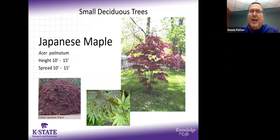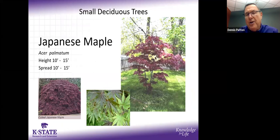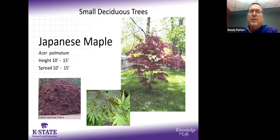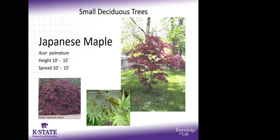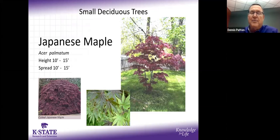Japanese maples range from a little four or five-foot plant up to much larger specimens. The most commonly used small tree variety is 'Bloodgood' maple — about 15 feet tall and 15 feet wide. It's a nice understory tree that will also take quite a bit of sun; with good moisture and nearly full sun it does fine. It checks the box for summer purple leaf color.